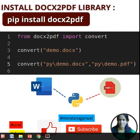To convert a document file to a PDF file, you have to install the docx2pdf library. From docx2pdf, import convert, then write convert('demo.docx'). Take any demo document file and convert it into a PDF file.